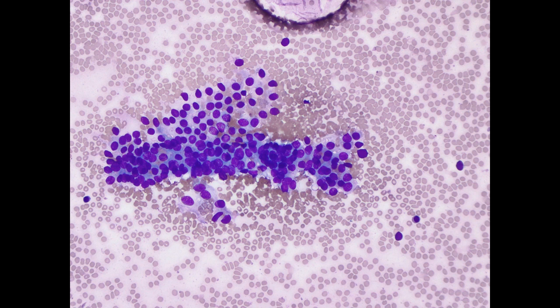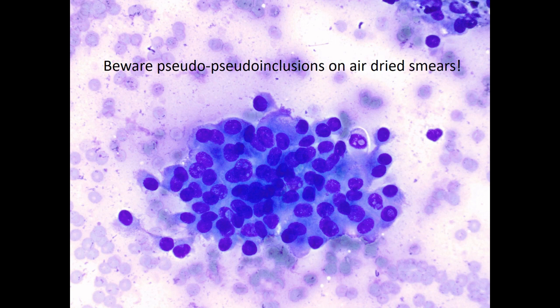On higher power, the nuclei are enlarged and somewhat elongated, and a vaguely papillary arrangement can still be appreciated, though true fibrovascular cores are not always evident. Watch out for pseudo-pseudo-inclusions on air-dried smears — red blood cells can sometimes get stuck on top of nuclei and create pseudo-pseudo-inclusions, although this one looks pretty real.